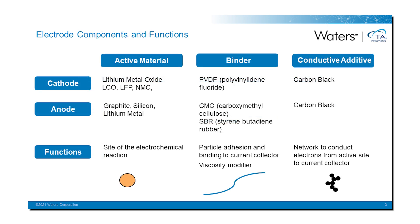Now let's look at the three main components of the electrodes: active material, polymeric binder, and conductive additive. The active materials are the cathode and anode components that directly take part in electrochemical reactions during battery charge and discharge. Their selection is directly related to final battery parameters such as voltage, range, and capacity. For cathodes, these include lithium metal oxides — LCO, LFP — and for anodes, it is generally graphite.